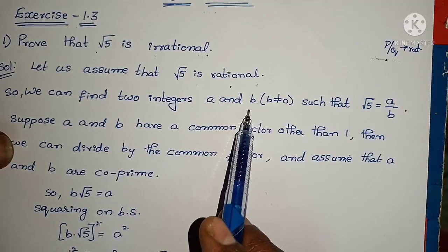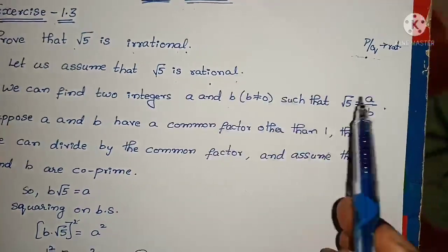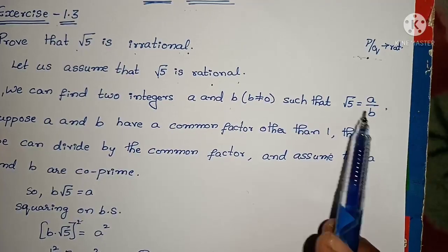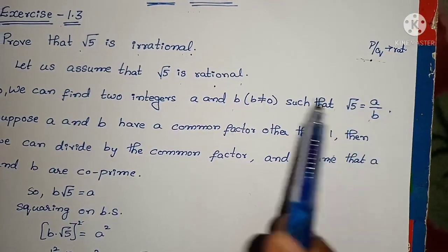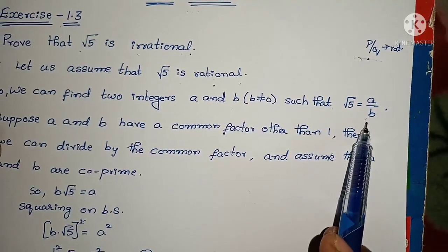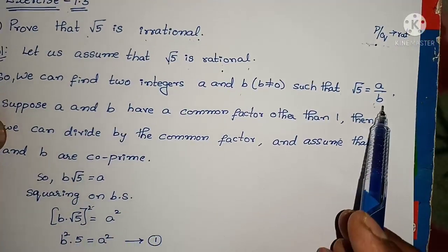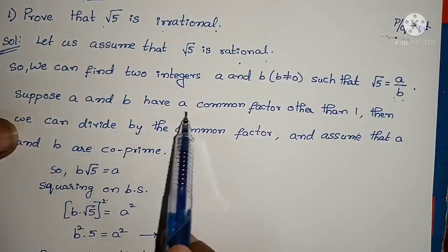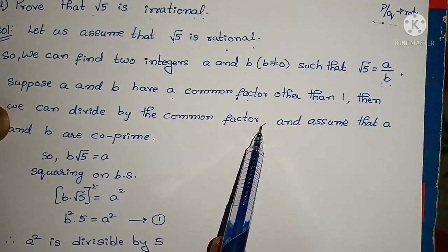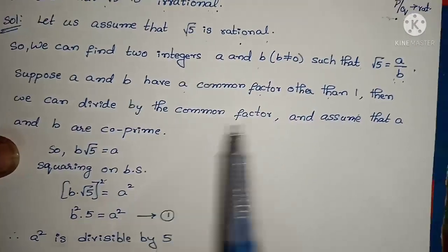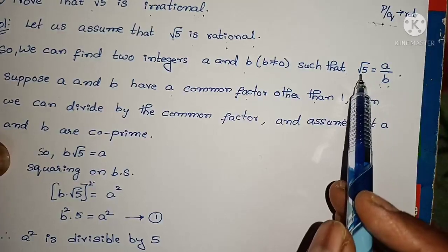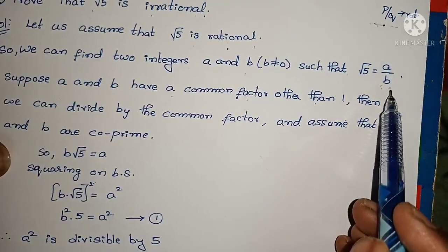So we can find two integers a and b such that root 5 equals a by b. Suppose a and b have a common factor other than 1; then we can divide by that common factor and assume that a and b are co-primes.